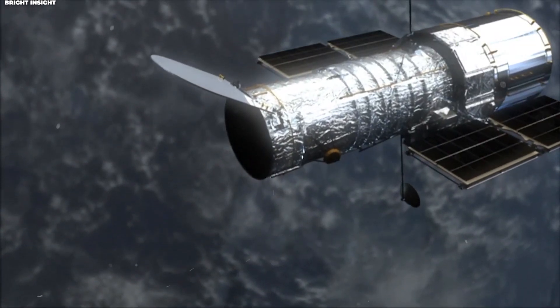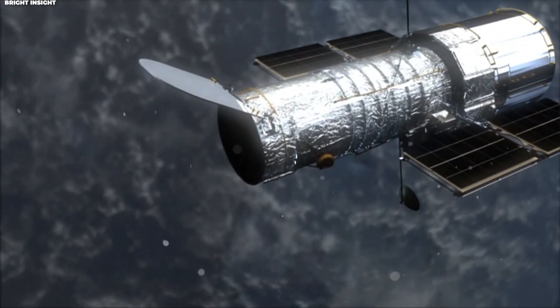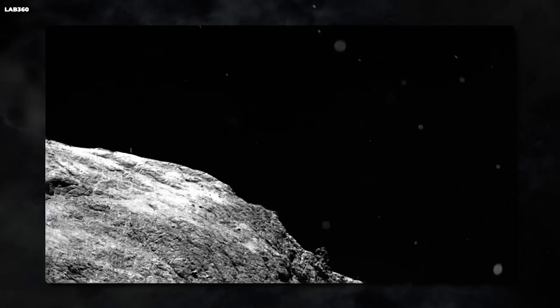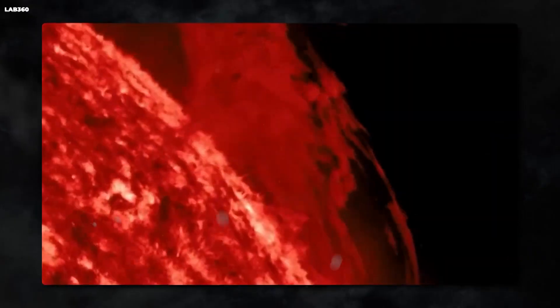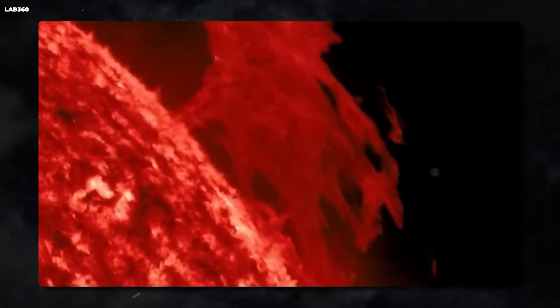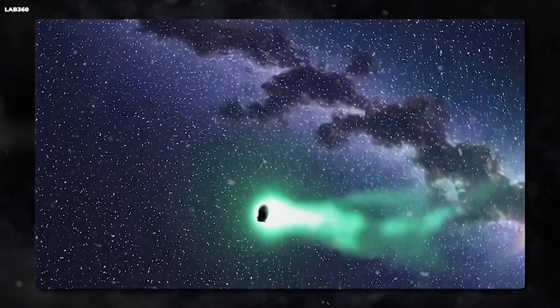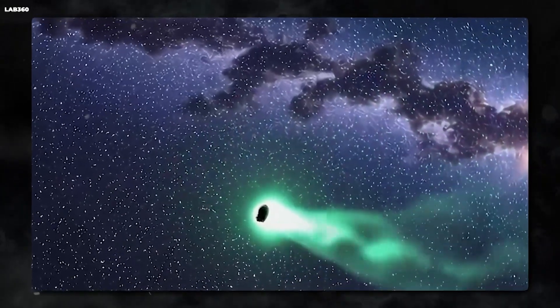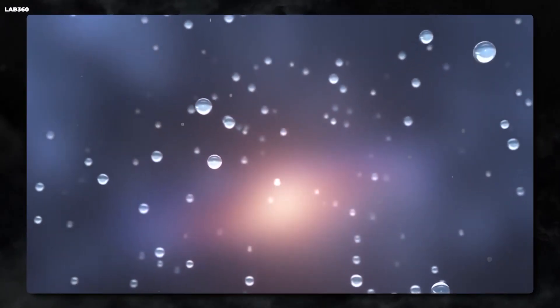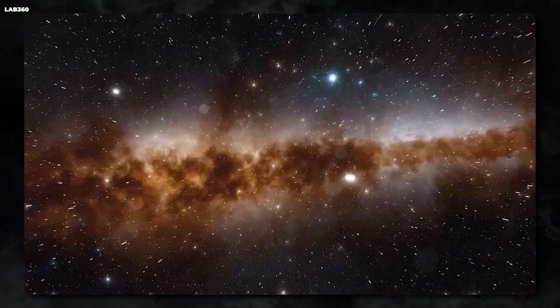Hubble Space Telescope: The Hubble was crucial for observing Borisov. Its high-resolution cameras could track the comet's movement, capture detailed images of its fragmentation, and measure subtle changes in its brightness and structure. Hubble made multiple observations over several months, building up a comprehensive picture of this interstellar visitor.